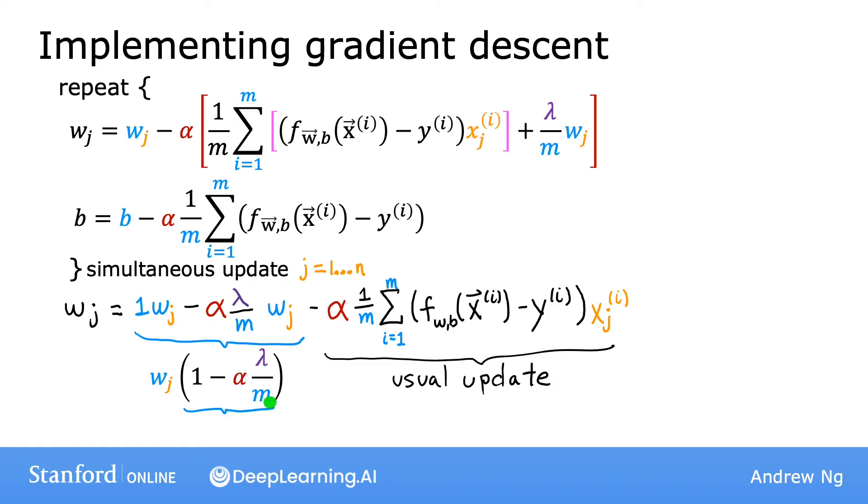So what is this first term over here? Well, alpha is a very small positive number, say 0.01. Lambda is usually a small number, say 1 or maybe 10. Let's say lambda is 1 for this example, and m is the training set size, say 50. And so when you multiply alpha lambda over m, say 0.01 times 1 divided by 50, this term ends up being a small positive number, say 0.0002. And thus, 1 minus alpha lambda over m is going to be a number just slightly less than 1, in this case 0.9998. And so the effect of this term is that on every single iteration of gradient descent, you're taking w_j and multiplying it by 0.9998, that is by some number slightly less than 1 before carrying out the usual update.